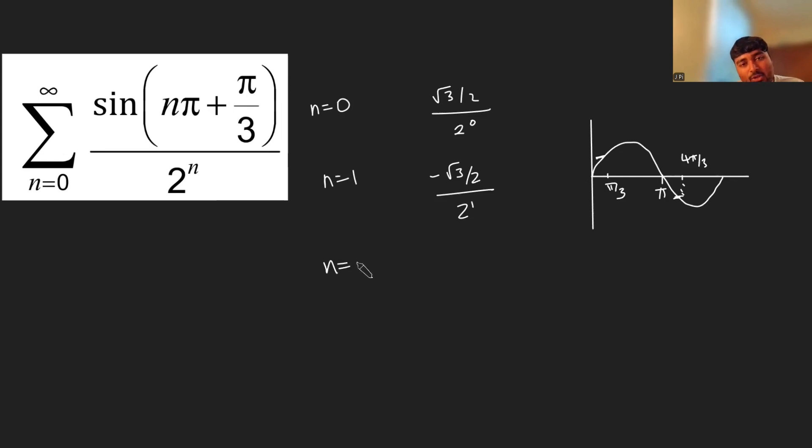What about when n equals 2? We're going to get sine of 2 pi plus pi over 3. But 2 pi, when we're putting it inside a sine, basically has no effect because we're just adding 2 pi on, adding 360 degrees on. Because the period of sine is 2 pi, that means it's not going to change it. So that's just going to be sine of pi over 3. So when n is 2, the numerator is just sine of pi over 3, which is root 3 over 2, divided by 2 squared.